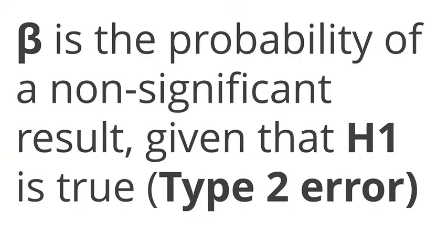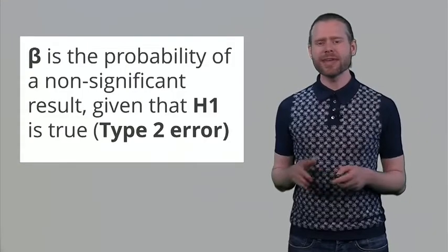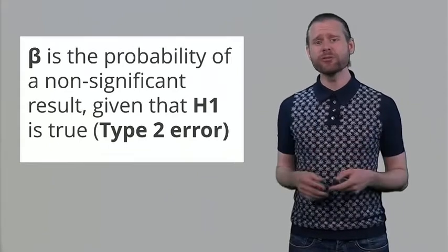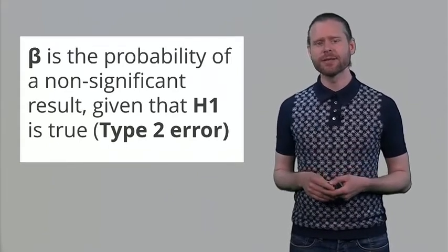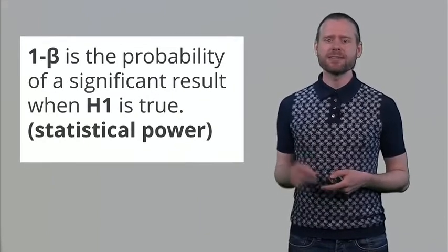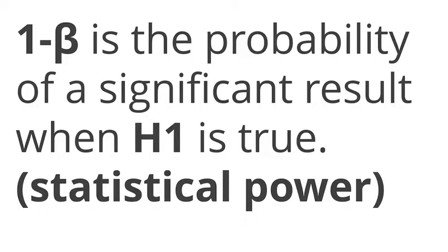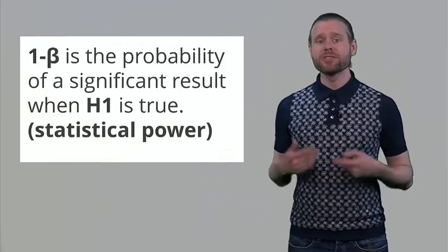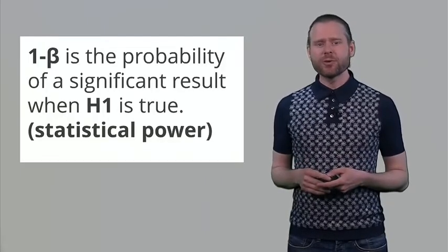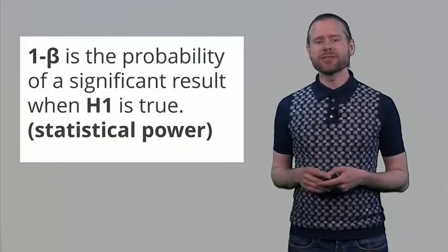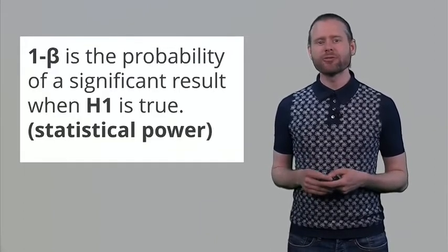The beta is the probability of a non-significant result given that the alternative hypothesis is true. This is known as a type 2 error. So this is the probability that you will say there is nothing going on here when there is actually a true effect to be observed. If we look at 1 minus beta, this is the probability of a significant result when the alternative hypothesis is true. So this is the statistical power when you design a study. 1 minus the type 2 error rate is the probability that you will actually find a result if there is a true effect to be found.